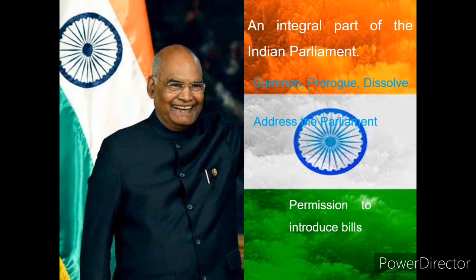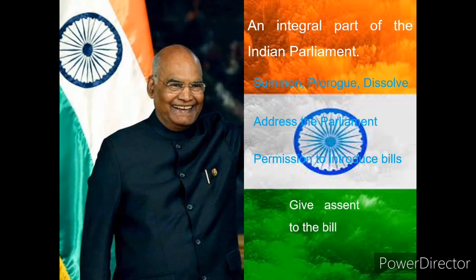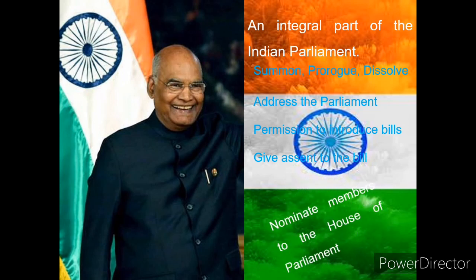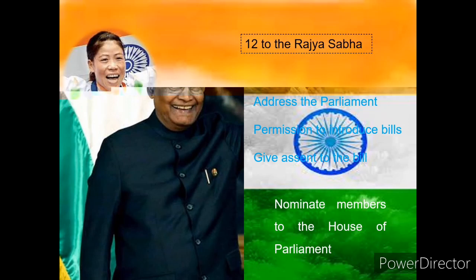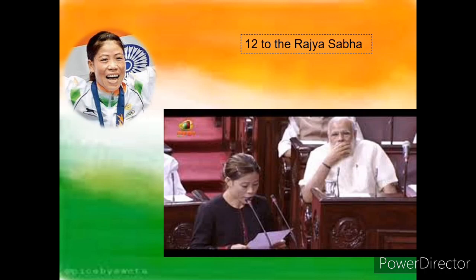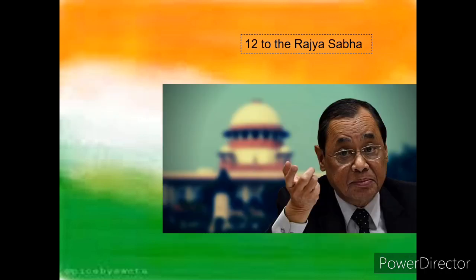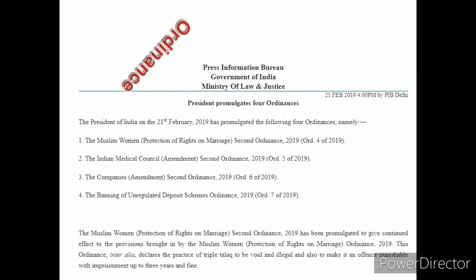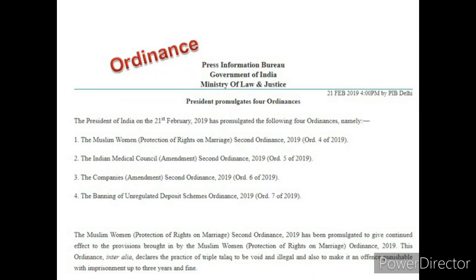Prior permission of the president is required to introduce certain types of bills that involve expenditure from the Consolidated Fund of India or regarding the creation of a new state. The president gives his assent — meaning his signature — to the bill; without his assent, no bill can become a law. The president can nominate 12 members to the Rajya Sabha. India's star boxer Mary Kom and recently distinguished jurist Justice Ranjan Gogoi have been nominated to the Rajya Sabha. He can also nominate two members from the Anglo-Indian community to the Lok Sabha. The president also has the power to issue ordinances when the parliament is not in session.